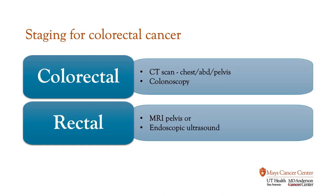How do we stage colon cancer? If someone has a colonoscopy and a tumor consistent with colon cancer is found, an oncologist will usually order a number of tests to see if the cancer has spread. We order CT scans of the chest, abdomen, and pelvis. If the cancer is in the lower part of the colon — the rectum — we do more detailed staging with an MRI or an endoscopy.